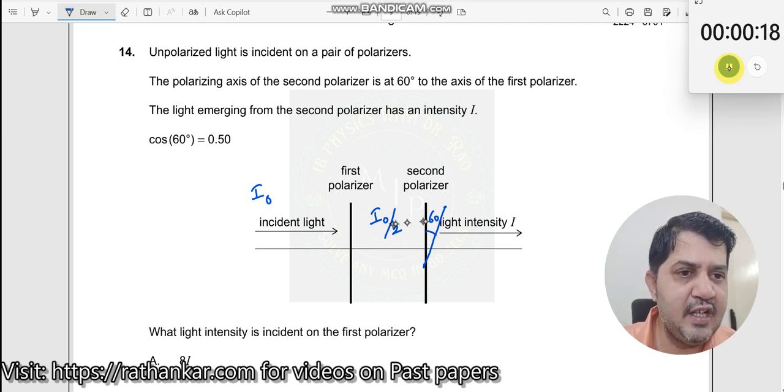And when this is i0 by 2, here you can apply Malus's law. What does Malus's law tell you? It is i0 by 2 cos square 60. Now this should be equal to i.